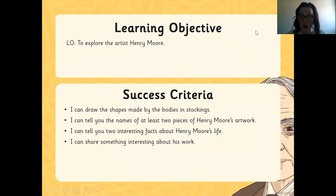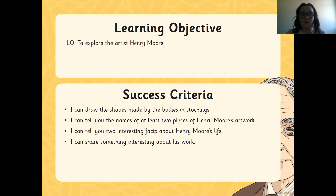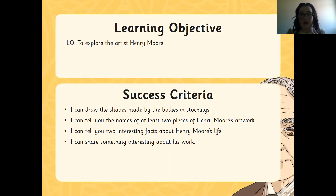Hello Year 3 and welcome to your art video for today. We're going to carry on looking at bodies — this is the second week now. Last week we looked at Julian Opie and we created the outline of a person's body using felt tips. I did one on Bethany on a scooter. Today we are going to explore the artist Henry Moore. We're going to think about interesting facts about him, and then I'd like you to draw your own sculpture like Henry Moore.